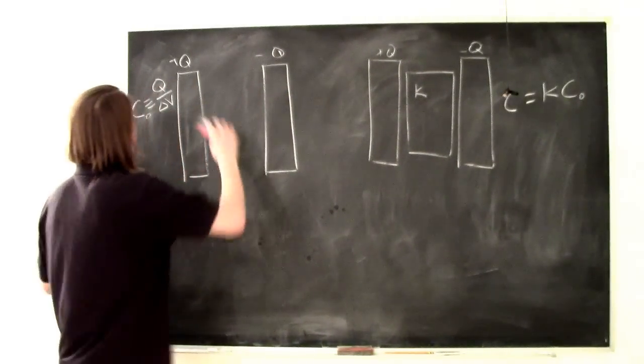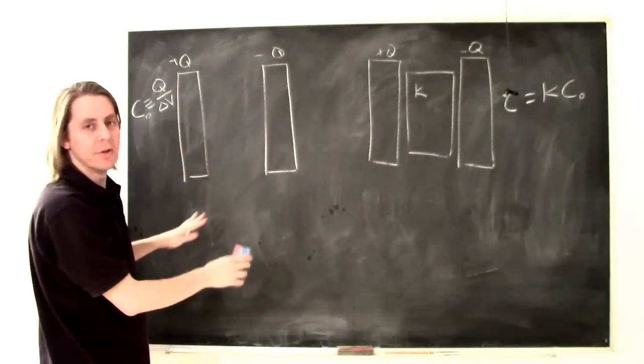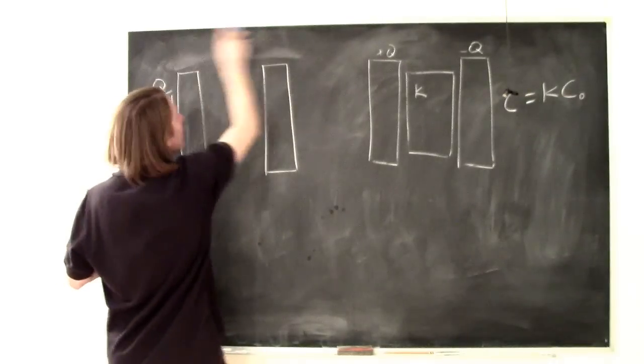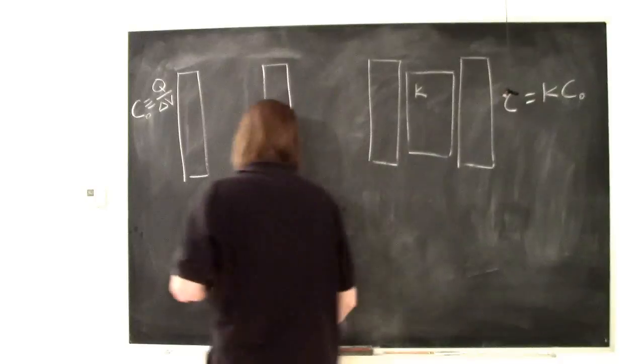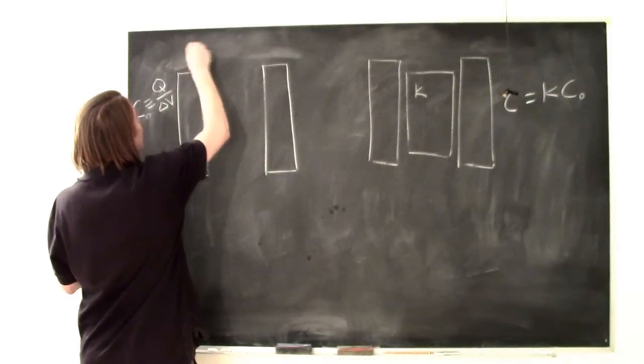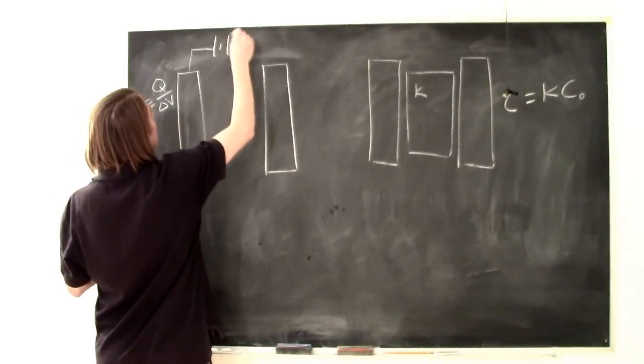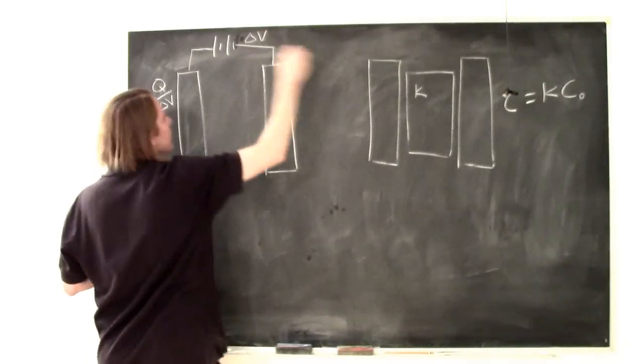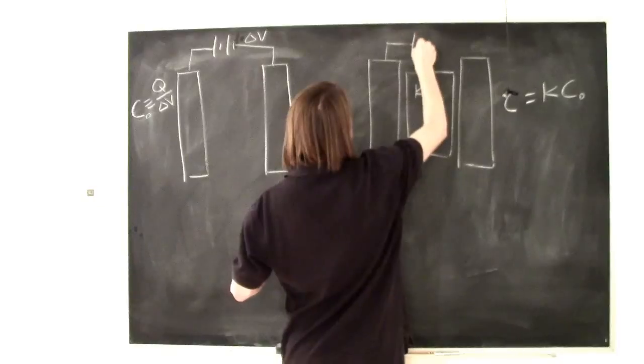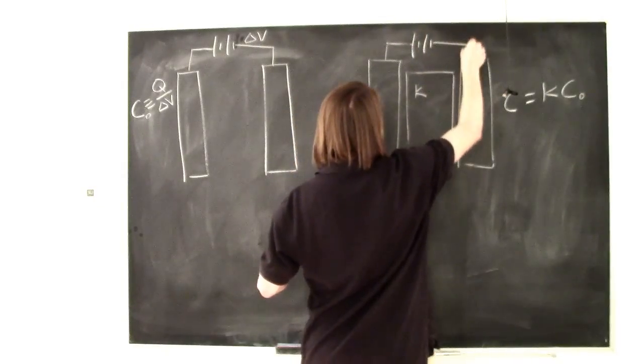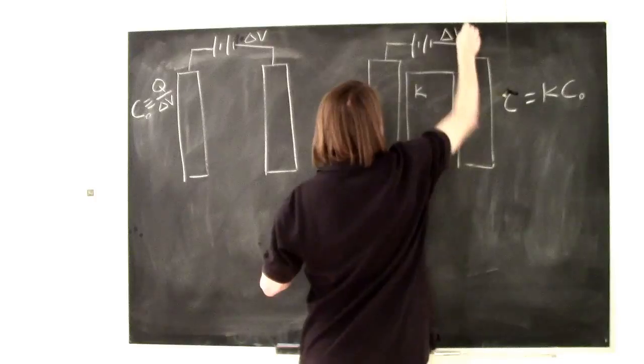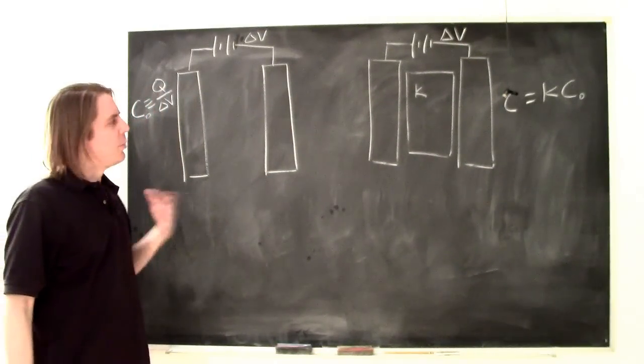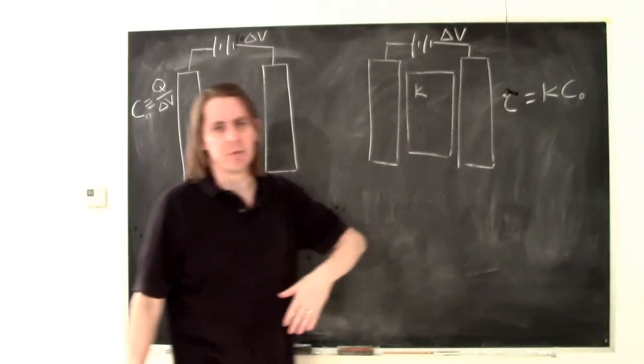However, capacitance is a property of just the object itself. It doesn't depend on the conditions you apply. So it should be true that that capacitance should also increase if we instead think about a battery holding the two plates at a constant potential difference, delta V. We can draw it this way instead, and so this is now a different condition, where we have constant voltage difference rather than constant surface charge. And we want to explain and see if we get the same thing, that the capacitance goes up.